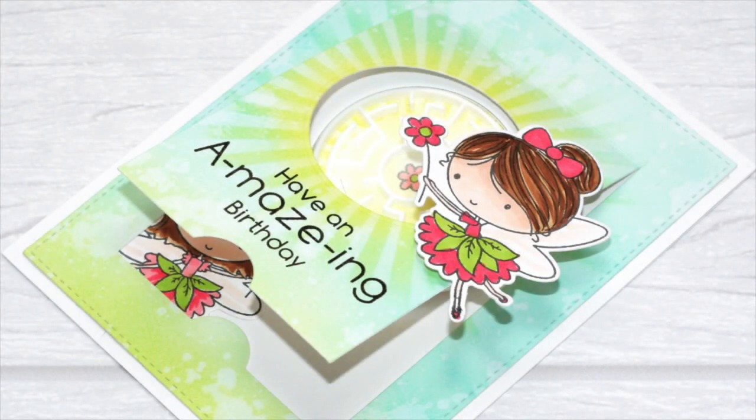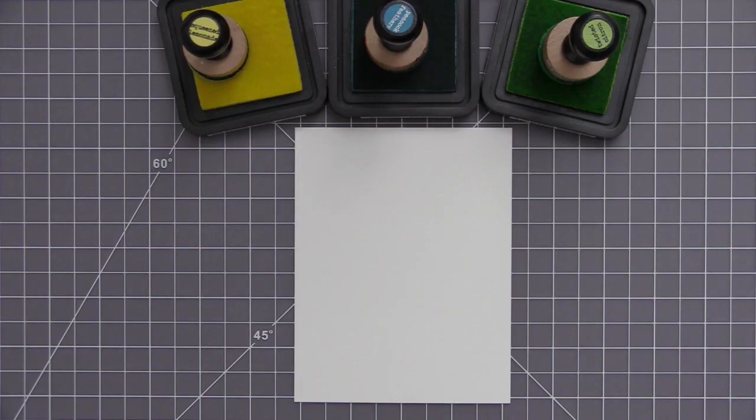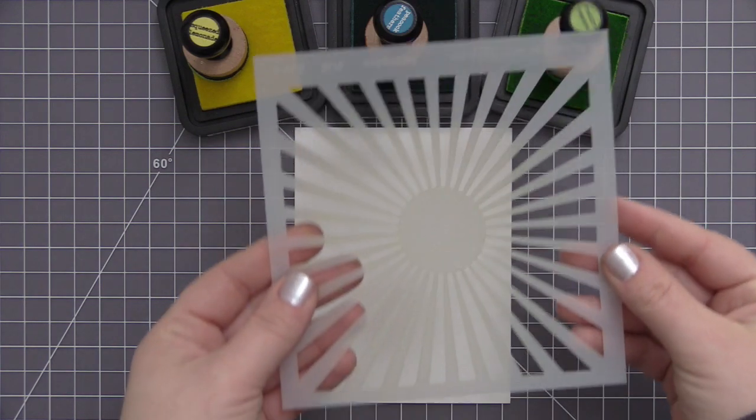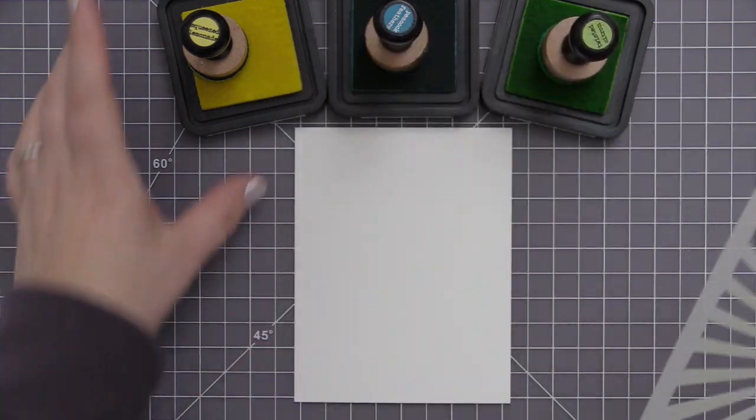Hey everyone, it's Stephanie here with a video for my favorite things. In today's video I'm going to be using some products from the new June 2017 release and we're going to create a card that features the new Fairy Happy stamp set and coordinating dies as well as the maze pieces.